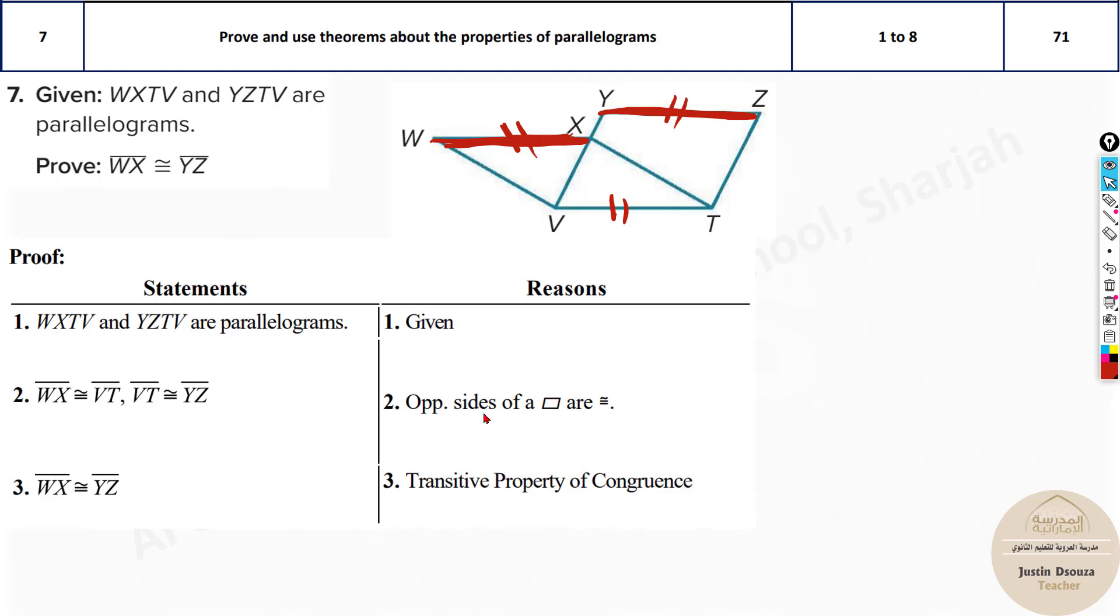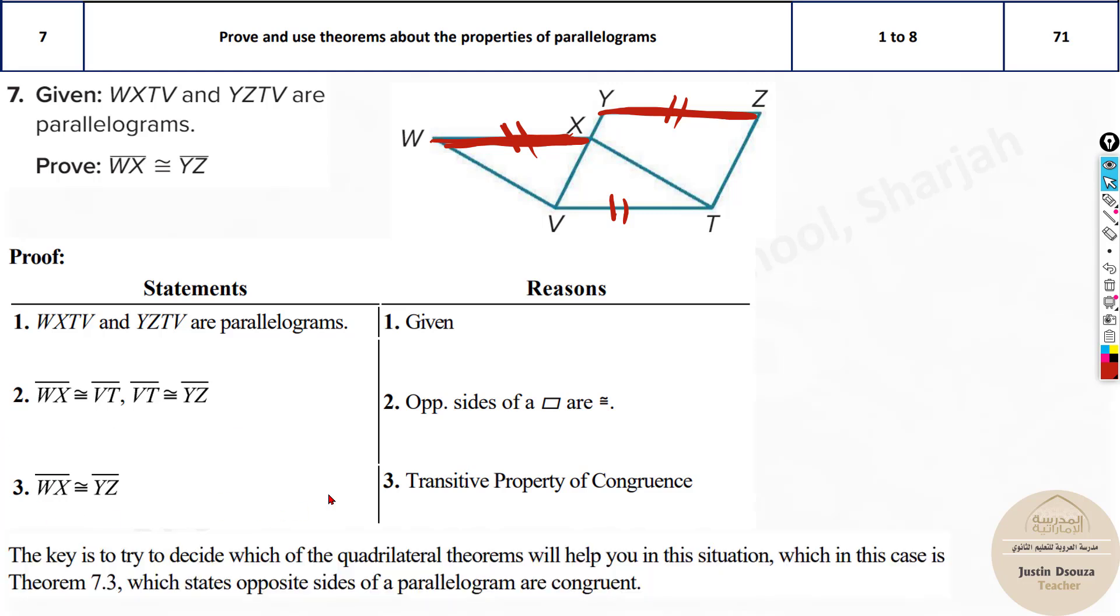Now from this, the transitive property means if two things are equal like this, then this and this will be equal. Because if the values WX is equal to T - say, imagine WX is 5. Then VT is also 5. And VT is equal to YZ. 5 and 5 again. So 5 is equal to 5 itself, right? So that's how we write it. Very easy and straightforward again. They're just telling how you have to do this. Basic things.